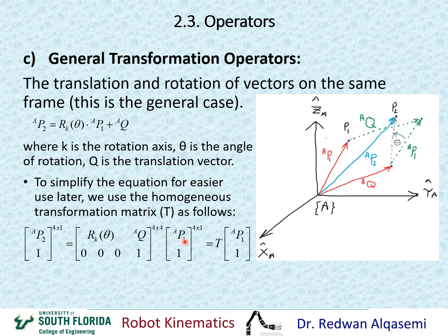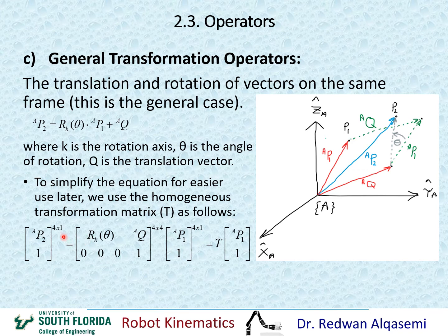If we multiply this directly by P1 relative to A, that would not be consistent because P1 relative to A is a three-by-one vector. To make it a four-by-one vector, we add a one at the bottom. So four-by-four times four-by-one is consistent, and that gives us a four-by-one result representing P2 relative to A with a one at the bottom. So P2/A and 1 equals the transformation matrix times P1/A and 1.